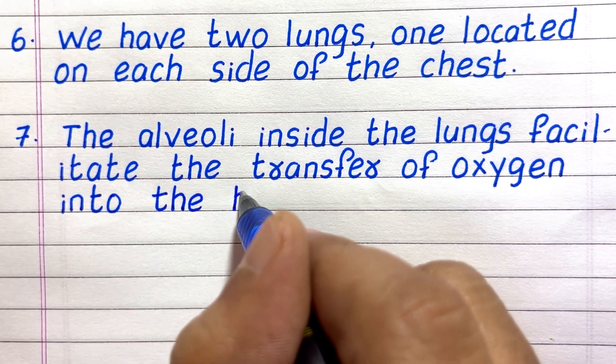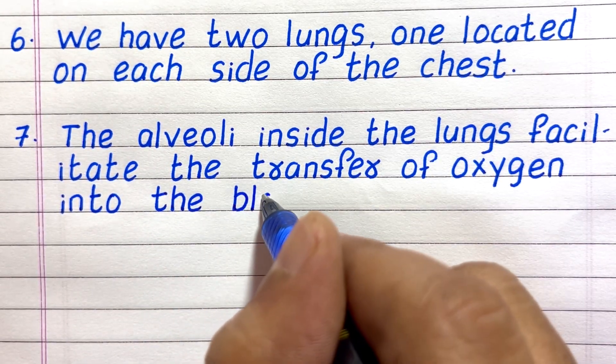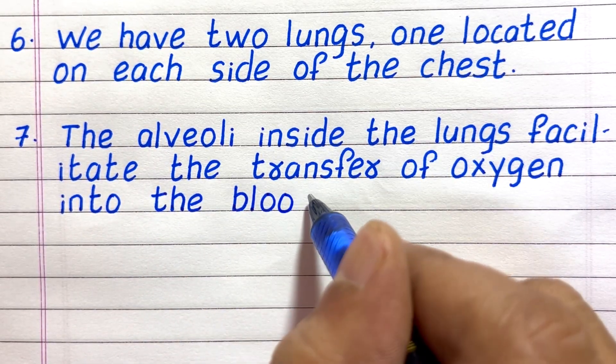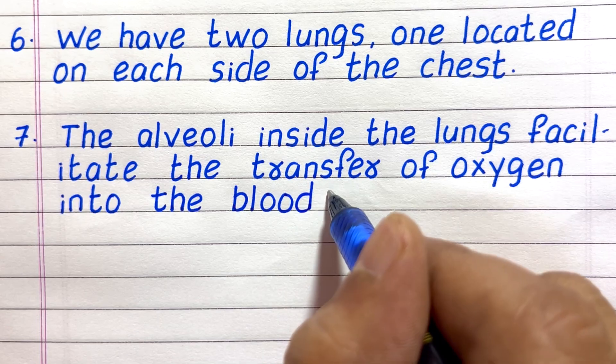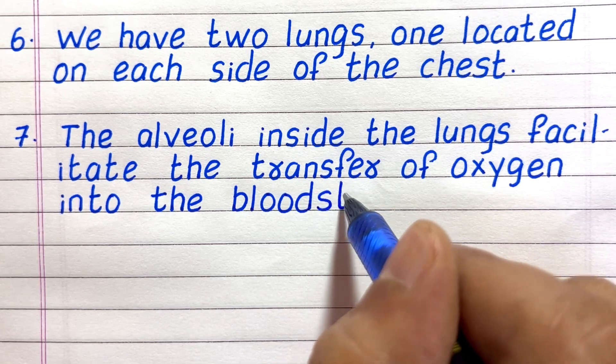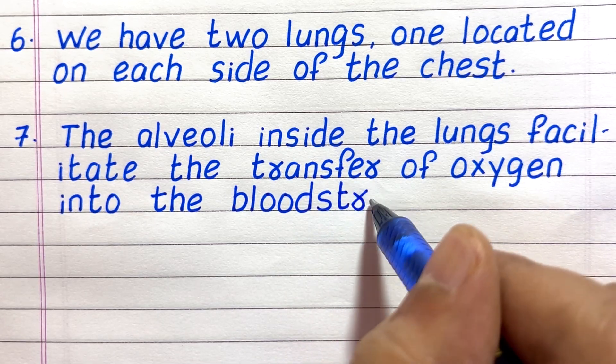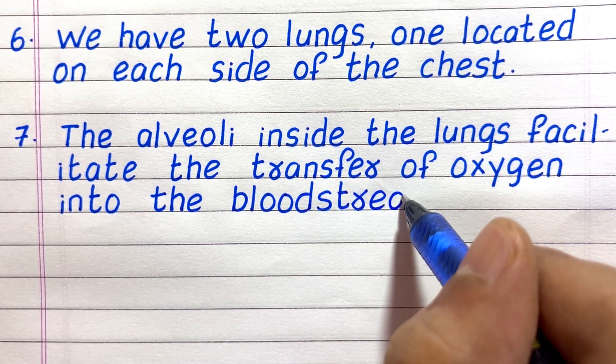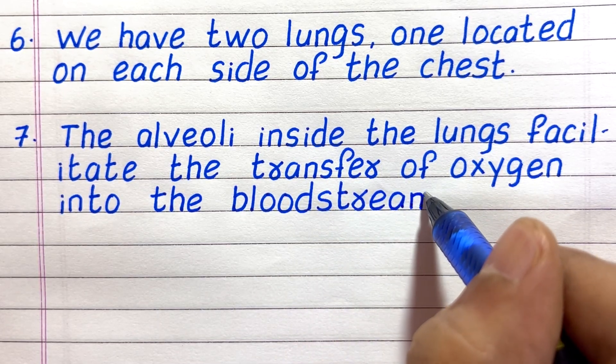Line 7: The alveoli inside the lungs facilitate the transfer of oxygen into the bloodstream.